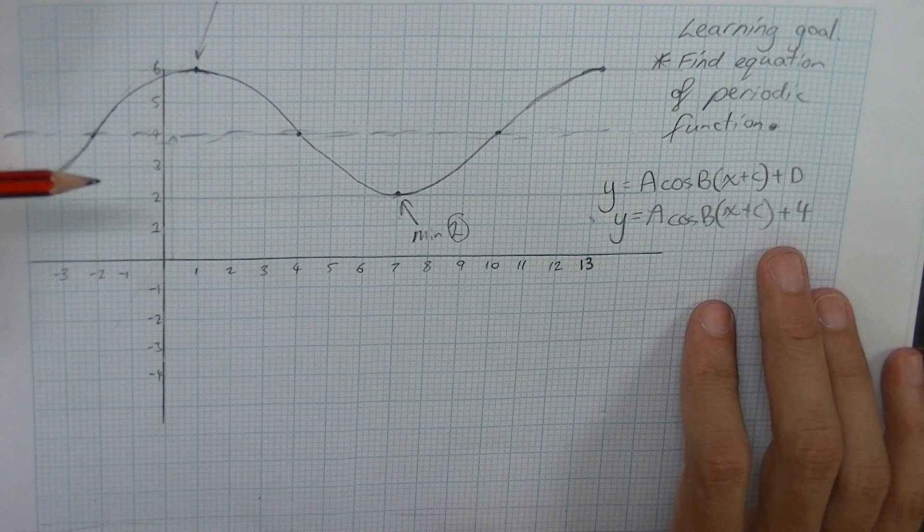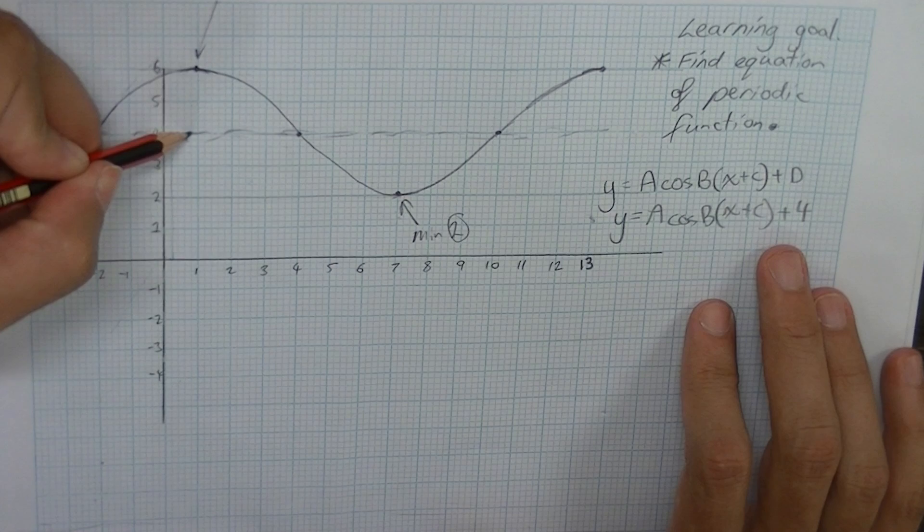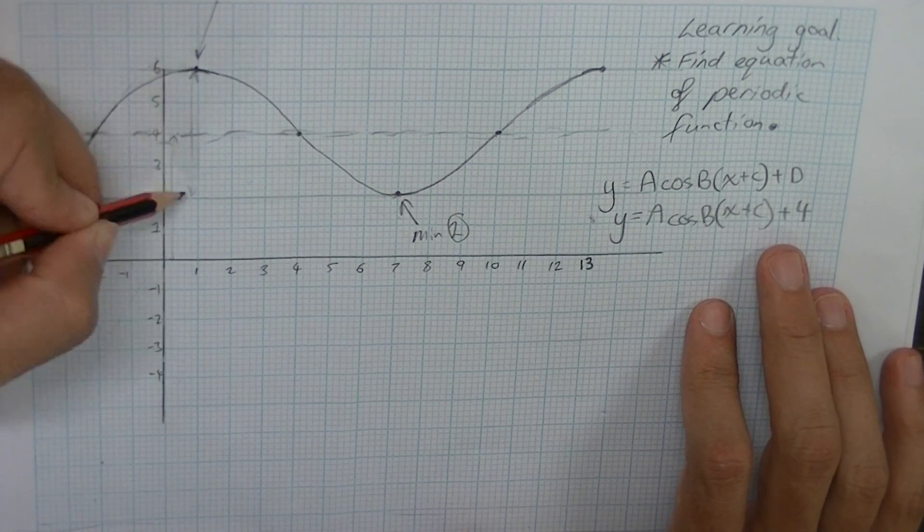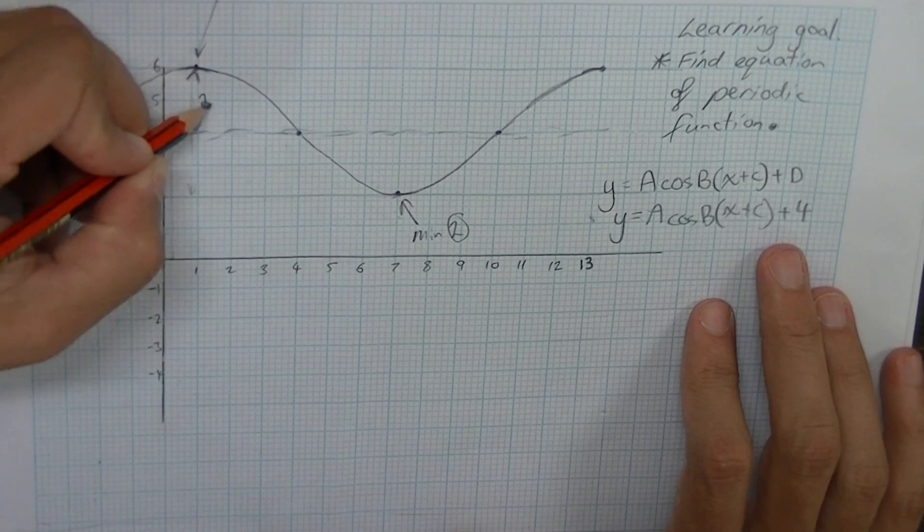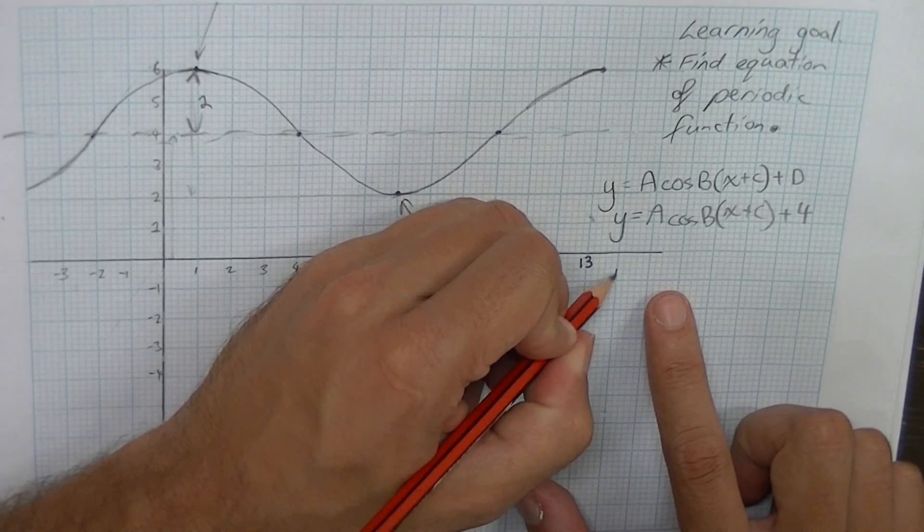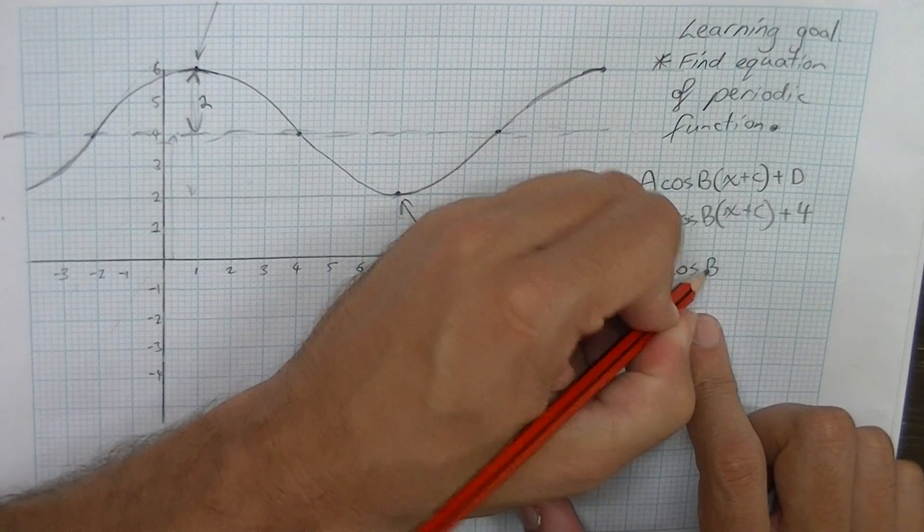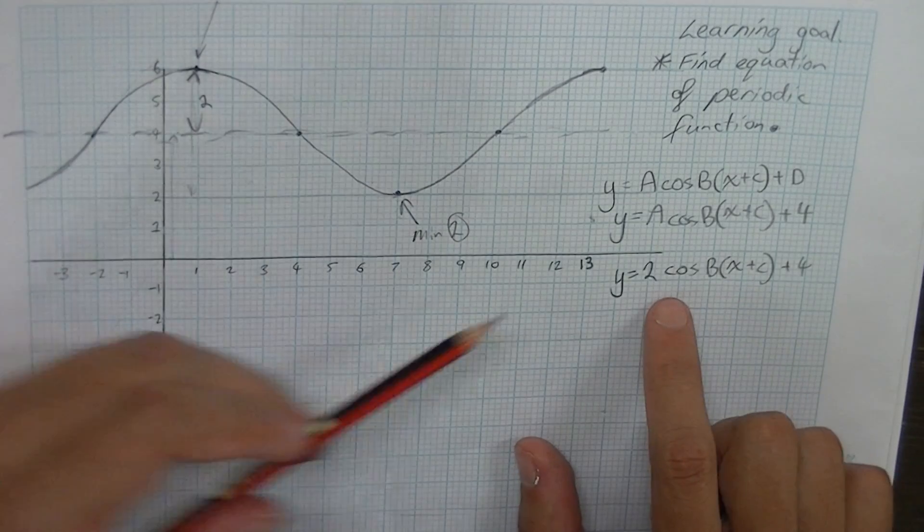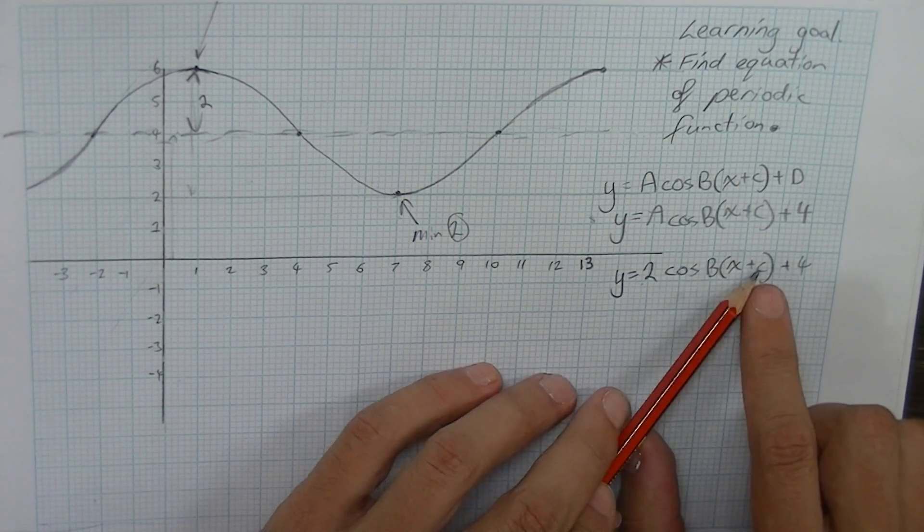It should be pretty straightforward now to look at the amplitude. Now remember the amplitude is the distance from the center to the top or from the center to the bottom. Obviously they're going to be the same. So the distance from 4 to 6, we can see that the distance from there to there is 2. That means that our a value here is going to be 2. So we've got a second piece of our puzzle here. y equals 2 cos b x plus c plus 4. We're halfway there now. We know that the a value is 2 and the d value is 4. We just need a b and a c value.